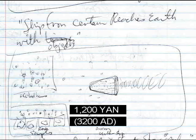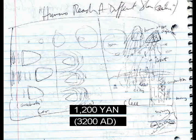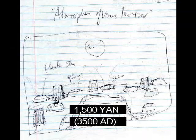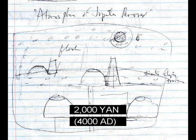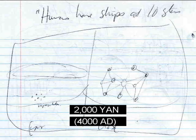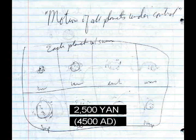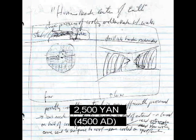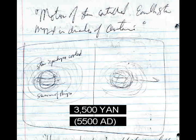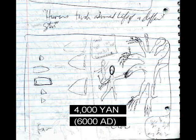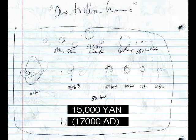Ship from Centauri reaches Earth with objects. Humans reach a different star — Centauri. Atmosphere of Venus removed. Humans live on Jupiter. Atmosphere of Jupiter removed. Humans have ships at 10 stars. Motion of all planets under control. Humans reach the center of the Earth. Image of advanced life of a different star. Motion of star controlled. Earth's star moved in the direction of Centauri. Humans touch advanced life of a different star. 1 trillion humans.